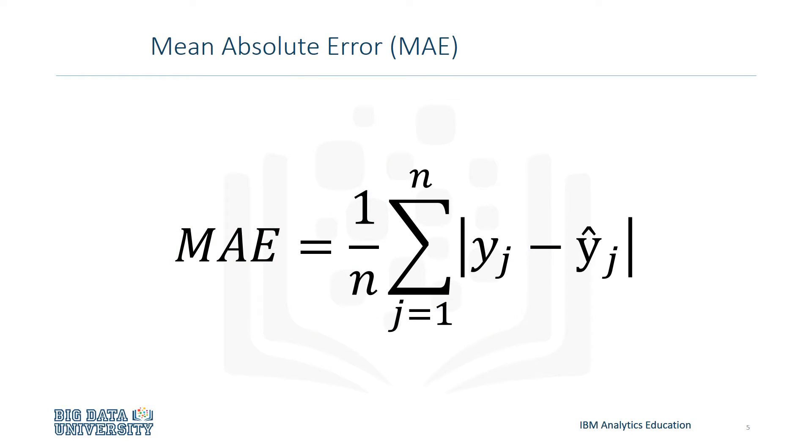Mean absolute error is the mean of the absolute value of the errors. It's shown here in this equation. This is the easiest of the three to understand since it's just average error.